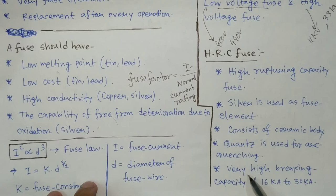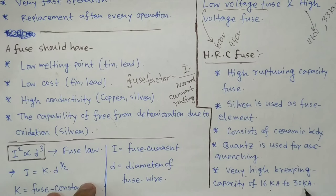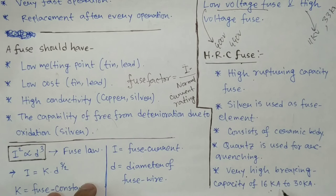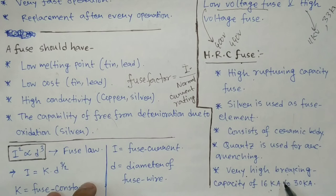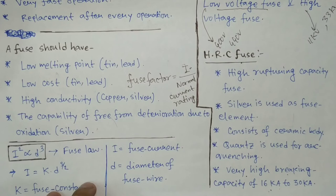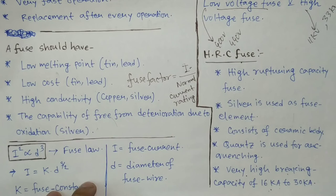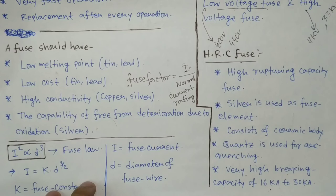HRC fuse has breaking capacity around 16 kilo amps to 30 kilo amps. No other fuse has as high breaking capacity as HRC fuse, and that is why HRC fuse is widely used. Breaking capacity means it is that RMS value of current at which the fuse can successfully break the circuit by melting without damaging the surrounding.